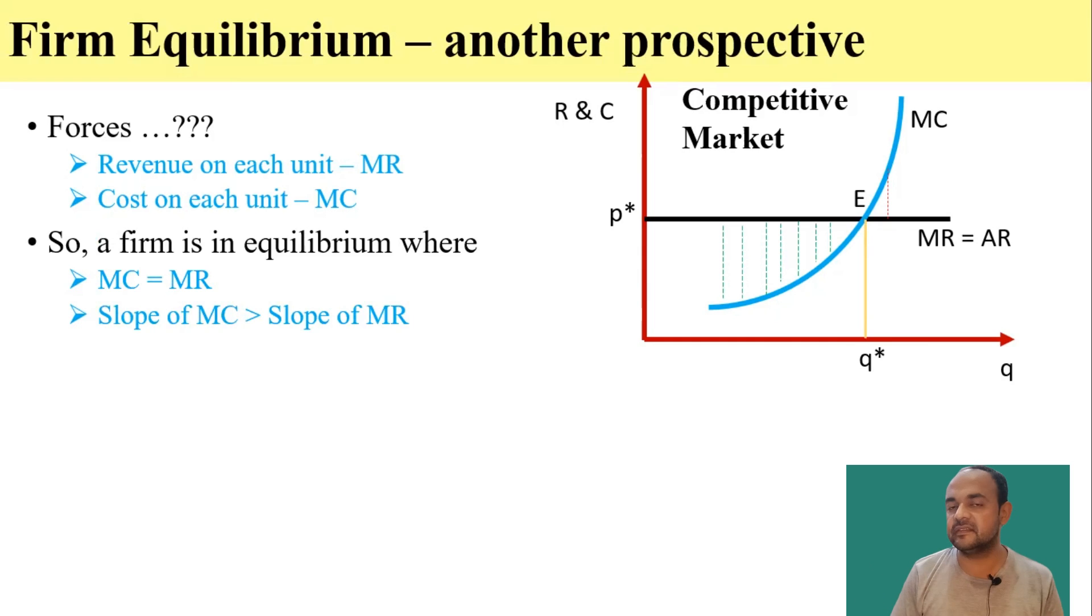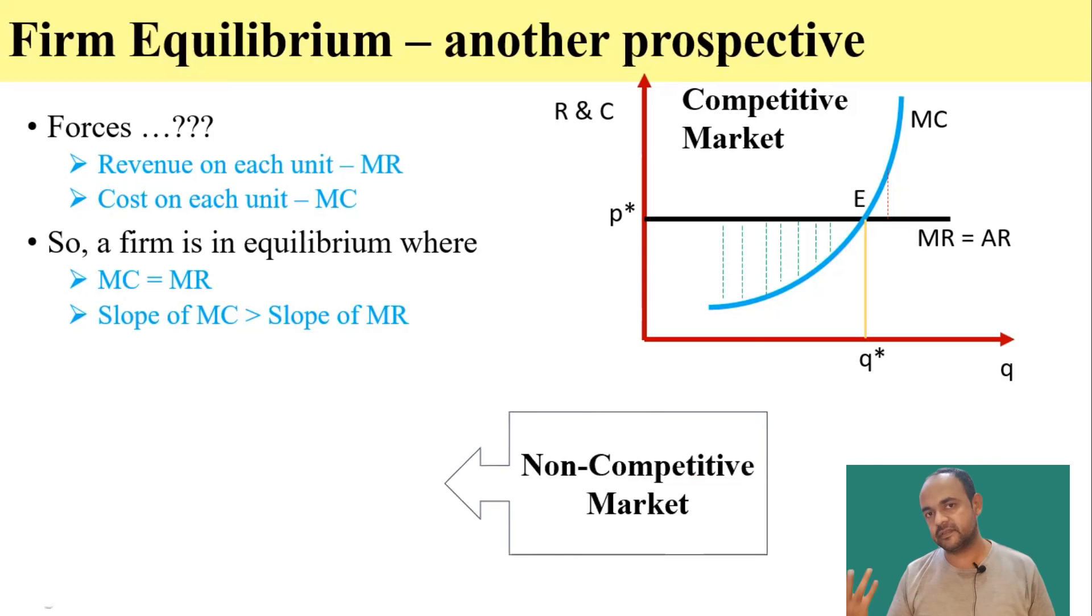Instead, it will decrease the total profit. Therefore, we can see that the profit of the firm will be maximum if it produces at a point where marginal cost is equal to marginal revenue and the slope of marginal cost is greater than the slope of marginal revenue.